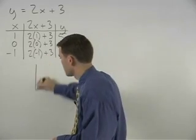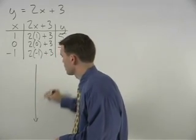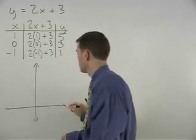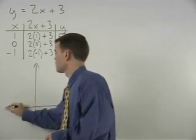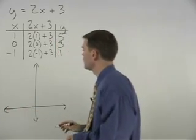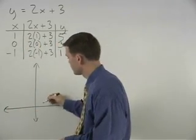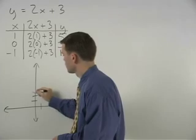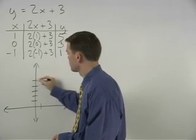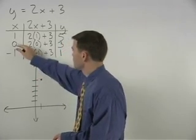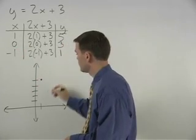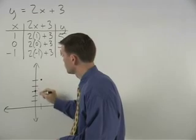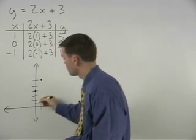Setting up our coordinate system, we plot the points (1, 5), (0, 3), and (negative 1, 1).